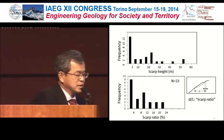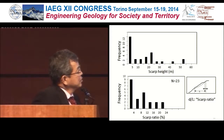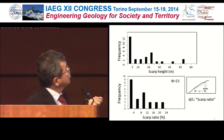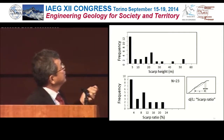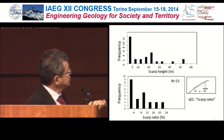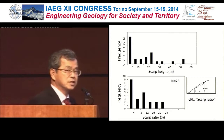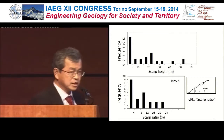This is a histogram of scarp height and scarp ratio, which is defined as the ratio between scarp width and slope length. We understand that very small scarps — less than 5 meters high — are most common. The scarp ratio increases with decreasing scarp height. A large scarp ratio may suggest that the landslide already stabilized after catastrophic failure.